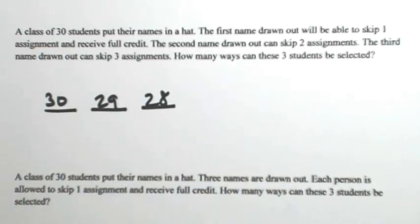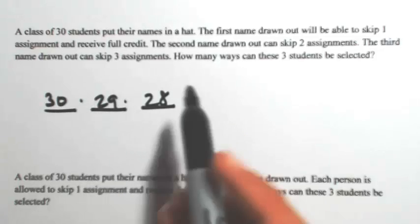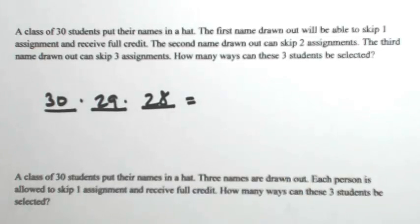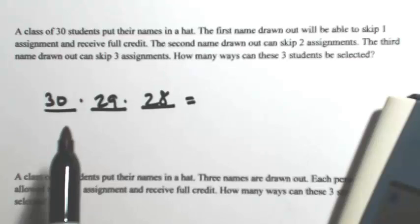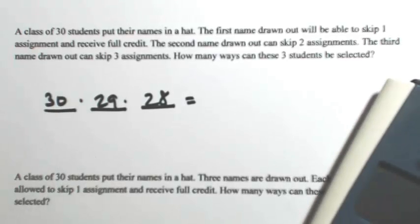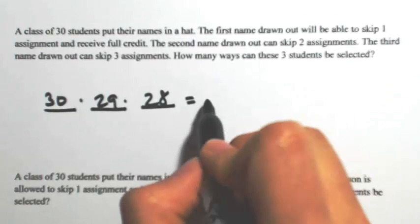Now by the fundamental theorem of counting, we have a sequence of events, so we multiply these together. This is not 30 factorial, just as a reminder. This is just 30 times 29 times 28, giving us 24,360 ways.